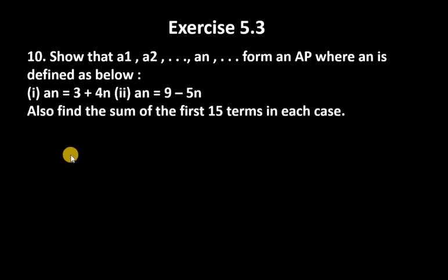Let's start with question number 10. It says show that A1, A2, and An form an AP where An is defined as below. In the first case, An is 3 plus 4n.